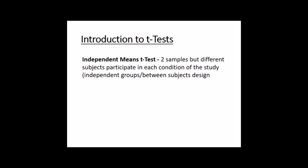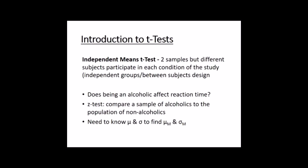Independent means: two samples but different people. An example is does being an alcoholic affect your reaction time? That's next week. It all comes down to estimating the population variance. I'm going to explain this conceptually — you'll do much better if you understand what we're doing and why, rather than just memorising a formula.